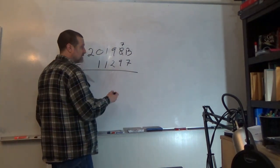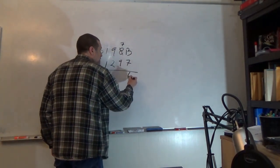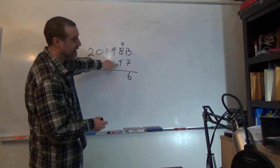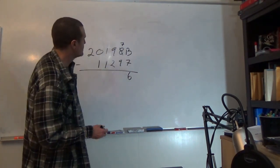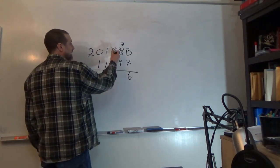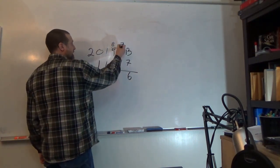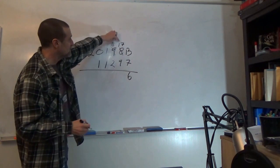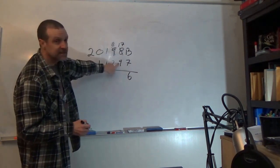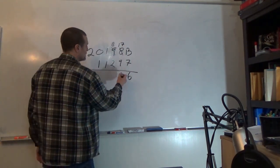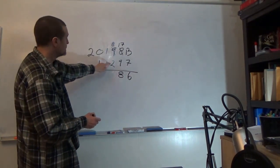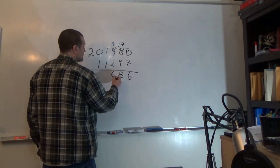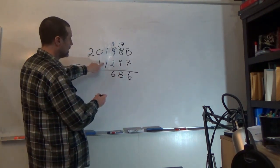So thirteen minus seven is six. Seven minus nine, again we can't do it because seven is smaller than nine. So we're going to take one away from the nine, make it an eight, put the one next to the seven to make it a seventeen. Seventeen minus nine is eight, eight minus two is six.